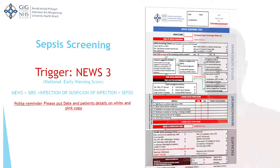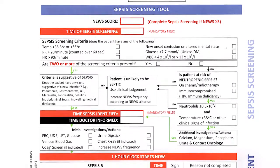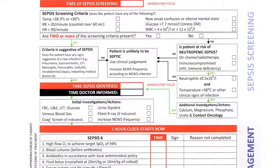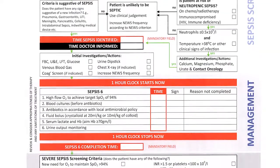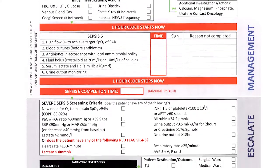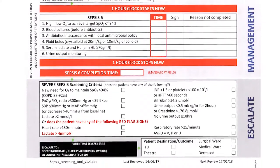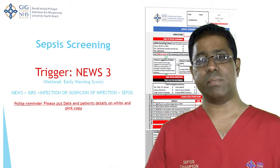Coming to the sepsis screening tool itself, the first thing to note is that we are going to use a NEWS score of three as the cutoff to initiate the sepsis screening tool. In the past the cutoff was a NEWS of four — even the NEWS cards still show four — but we have changed it. It has been agreed in the trust and by the RALS and the Thousand Lives group that NEWS of three is the agreed cutoff.